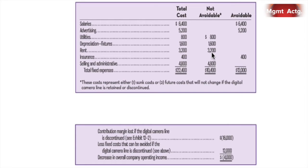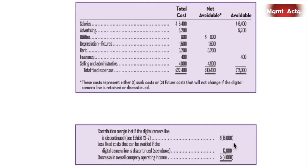This is irrelevant. Insurance — the insurance is for the inventory. If we get rid of the product line, we also get rid of this inventory, so off it goes. And then selling and administrative expense of $4,800 — that's overhead, it's allocated, we're not going to do anything about that, so it doesn't go away. So we're really only going to save $12,000. Our contribution margin from the digital camera line that would be lost is $16,000. We're going to save $12,000 — so we're going to lose $4,000 by getting rid of the line.